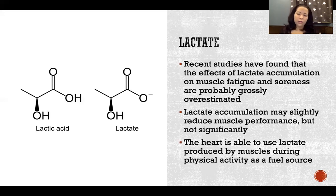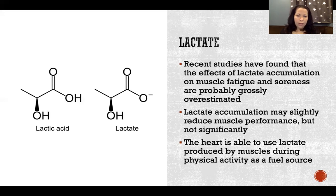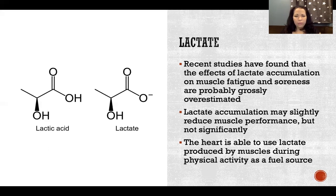The heart is also able to use lactate produced by muscles during physical activity as a fuel source. Cardiac muscle tissue actually takes up lactate from the blood and uses it as fuel, which is an incredibly efficient system. As the muscles are working hard and producing this lactate byproduct, the heart is taking it out of the blood and using it for its own fuel.